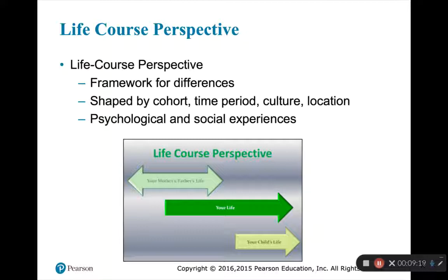Finally, the life course perspective attempts to connect both societal and individual factors that affect human development. At the societal level, it stresses how cohort, time period, culture, and location are important to development — for example, having access to particular opportunities and experiences will affect your life experiences. At the individual level, it stresses how psychological and social experiences shape development. This explains the advantages and inequities in a person's life and how that affects their perspective.